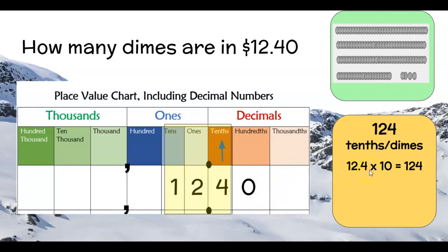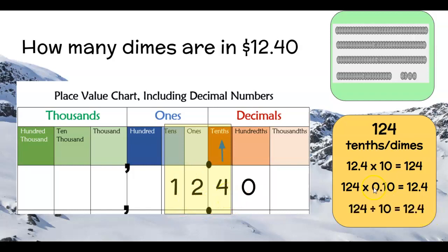We could also say: 124 dimes, each worth one-tenth, multiplied together gives twelve and four tenths. When you multiply a whole number by one-tenth, it slides back on the place value chart to give twelve and four tenths. This is also like division — 124 divided by 10 — because we are moving back a place value from the whole numbers.